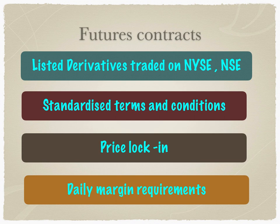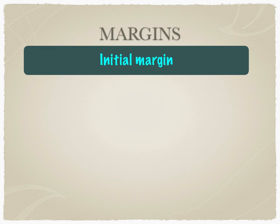Traders can take a long or short position in the contract. There is a price lock-in and a significant amount of leverage, and therefore traders must strictly maintain margins with the stock exchange. The margins are of the following types. The first is called the initial margin — the margin provided to the broker so that the trader can initiate a position. As soon as you place a contract, the broker collects the margin because the stock exchange collects the margin from the broker.